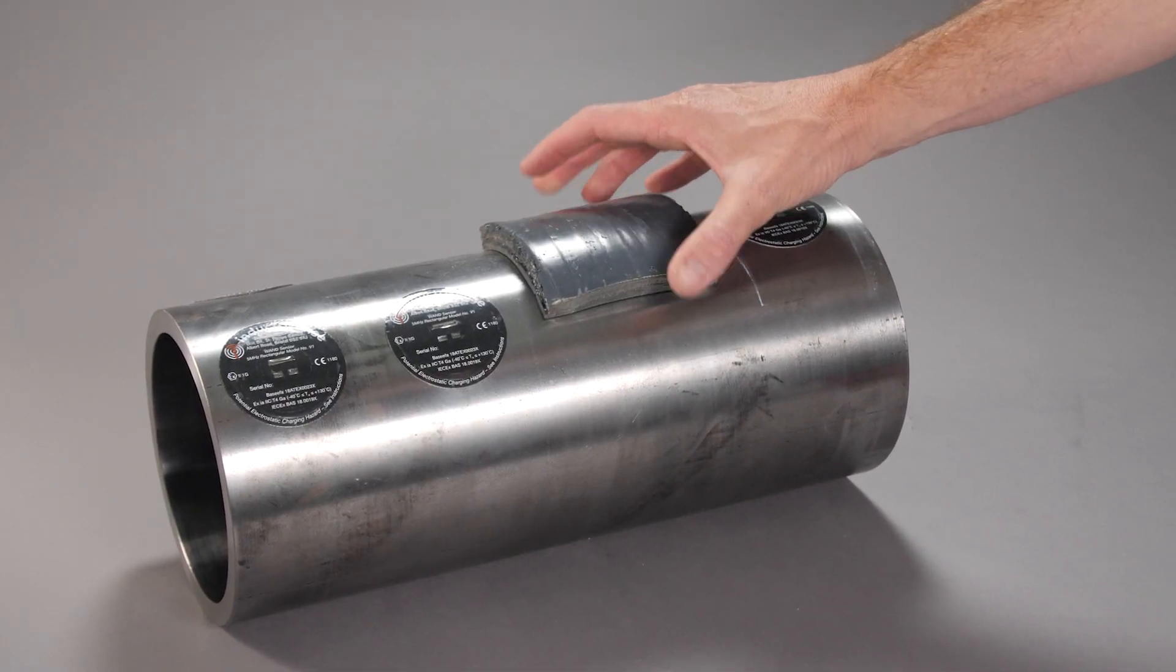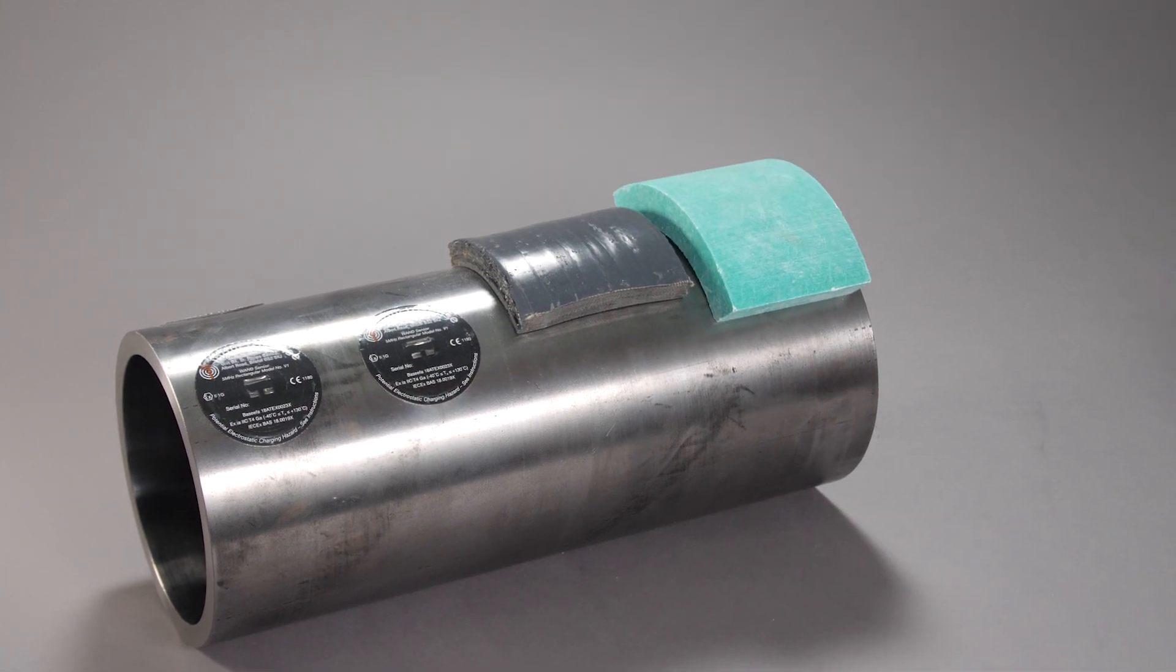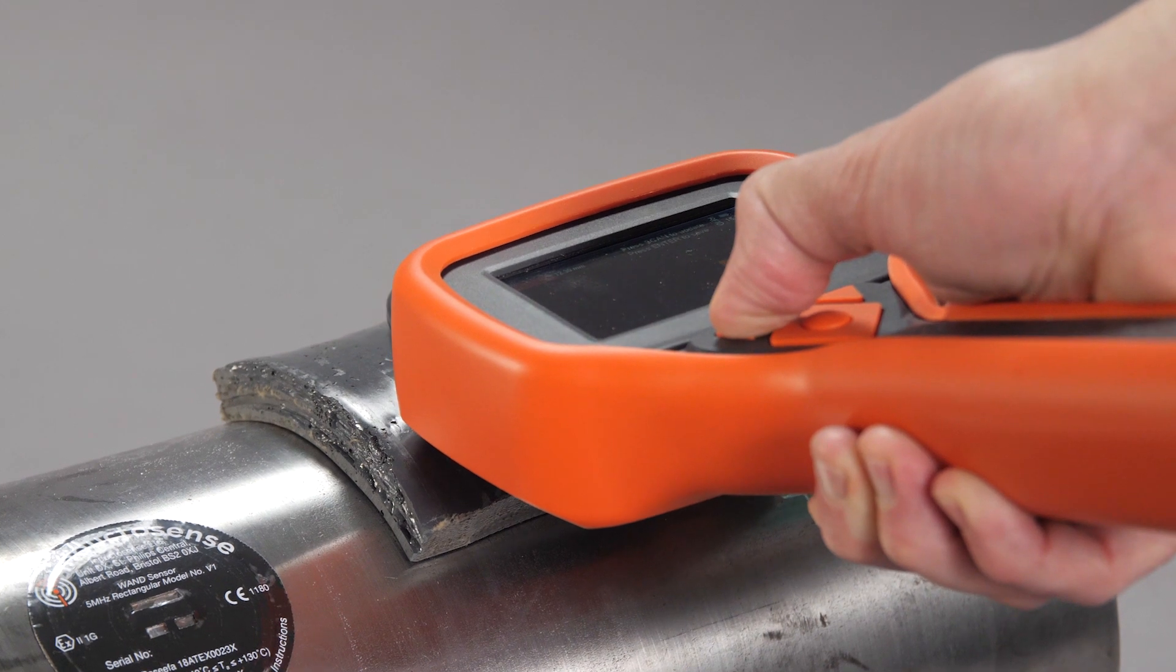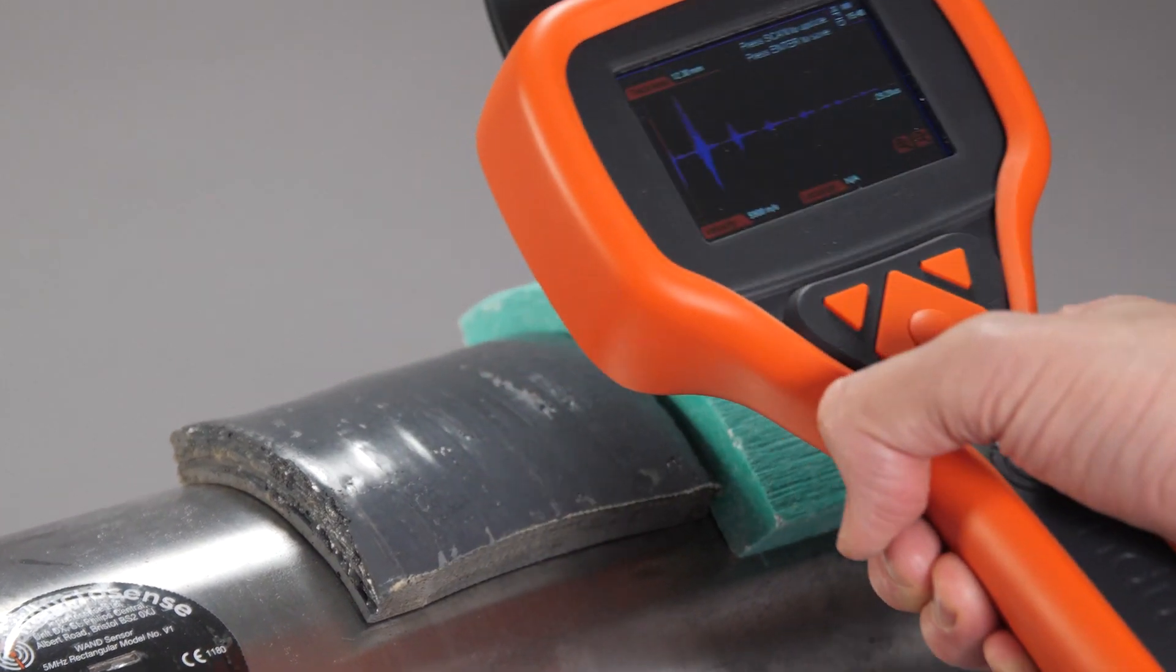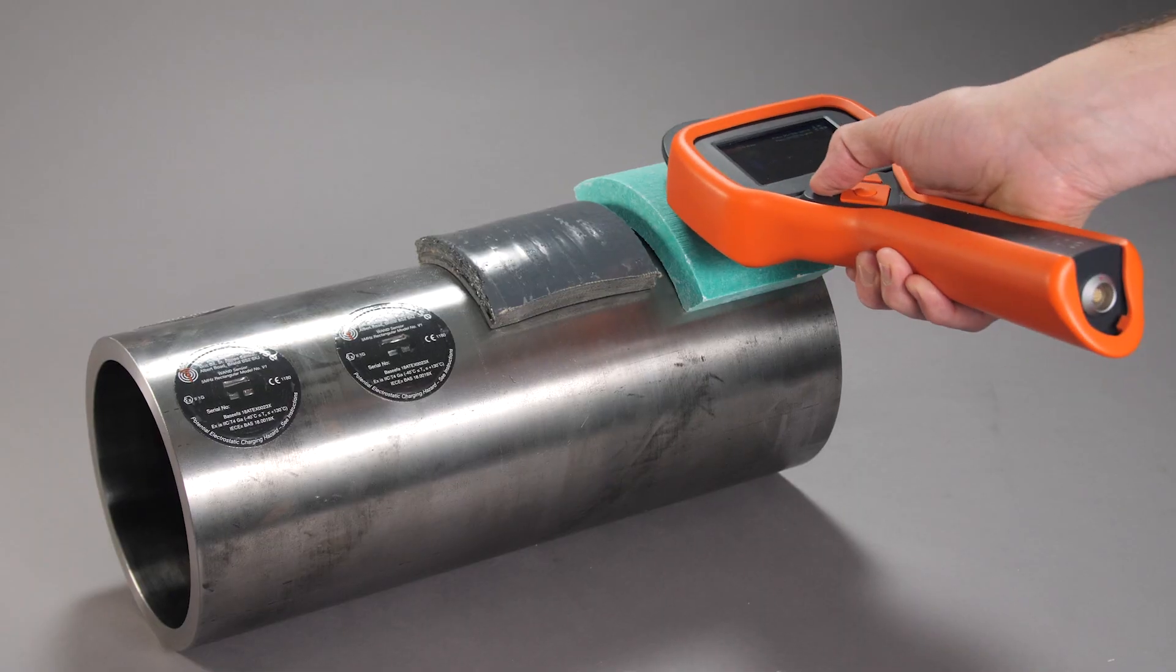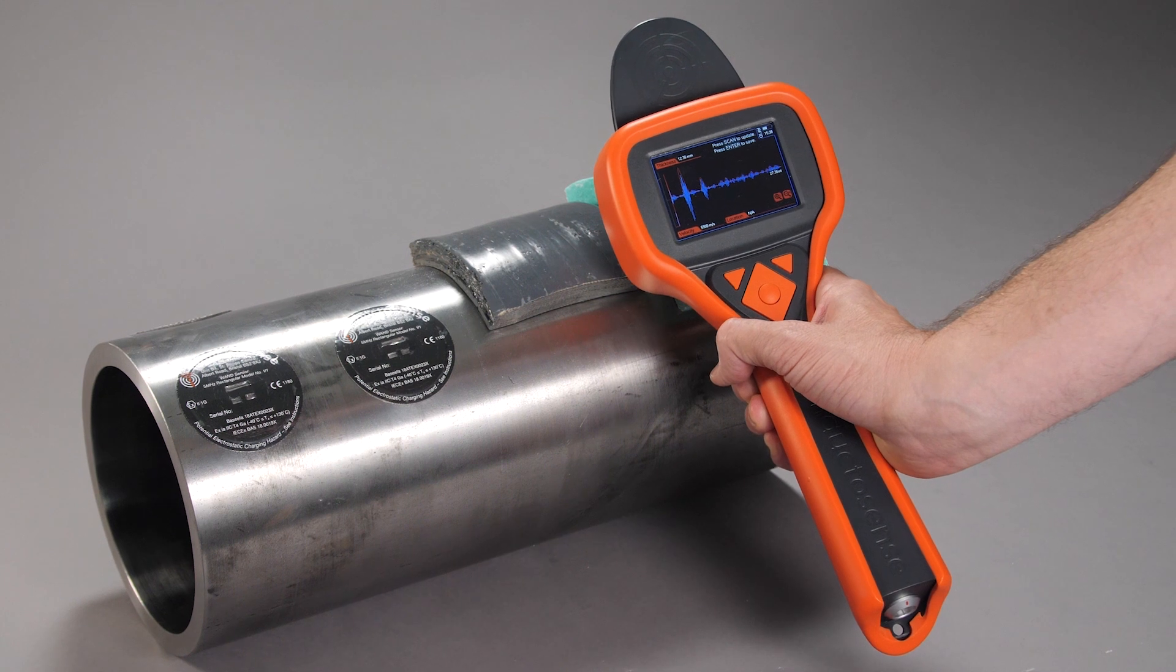A unique advantage of the WAN technology is that the sensors can be permanently embedded underneath material and activated when the probe is brought nearby. For example, they can be embedded underneath coatings, composite repair or cladding. The measurement of a structure can then be made without the need to remove the outer materials.